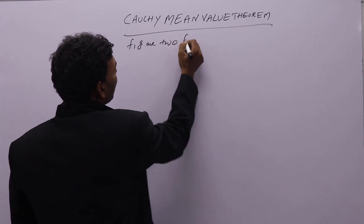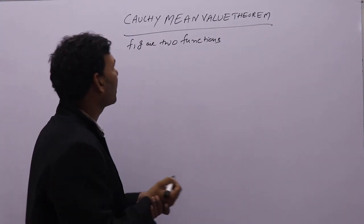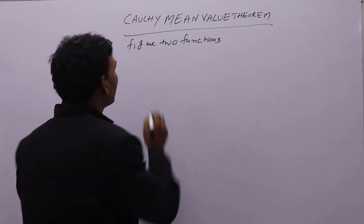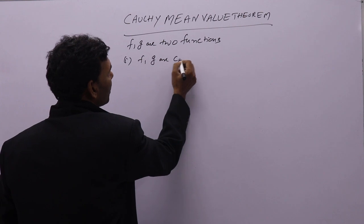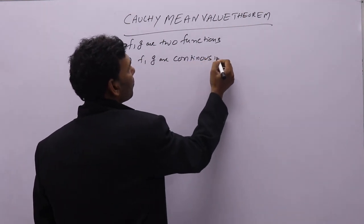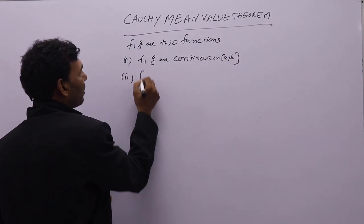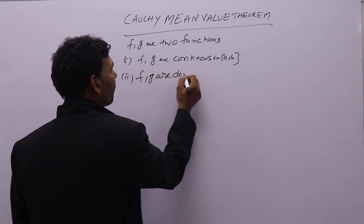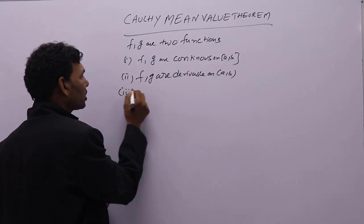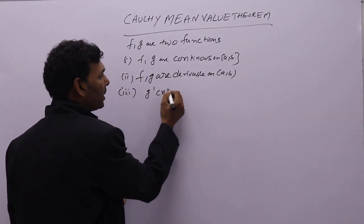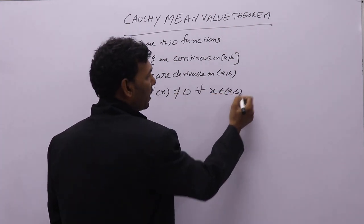If f and g are two functions mapping closed interval [a, b] to ℝ, then both are continuous. f and g are continuous on closed interval [a, b].